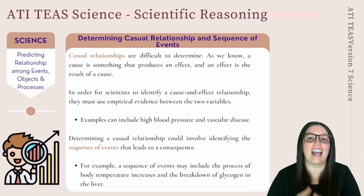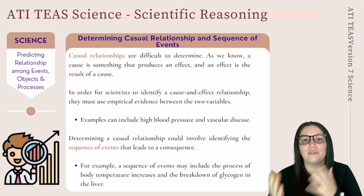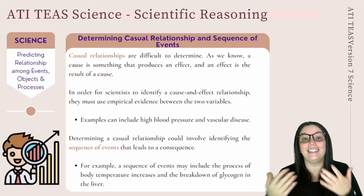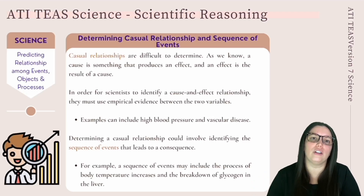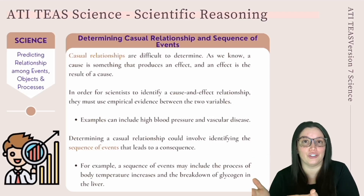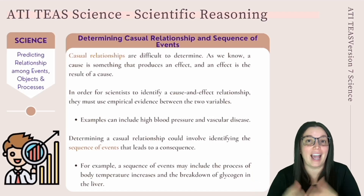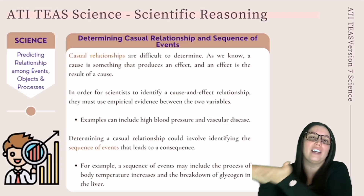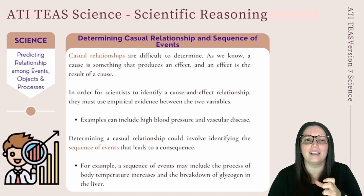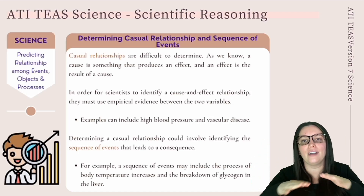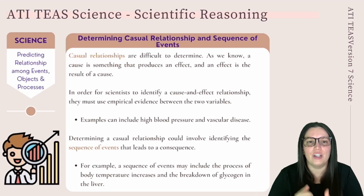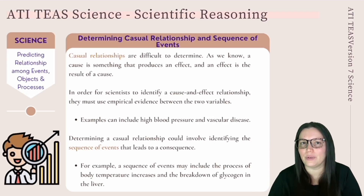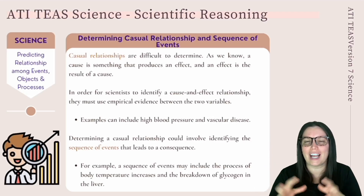Causal relationships are difficult to determine. Scientists must use empirical evidence between two variables to identify cause and effect — for example, high blood pressure and vascular disease: we know they affect each other, but how? Determining a causal relationship can involve identifying a sequence of events leading to a consequence. For example, when body temperature rises, the brain alerts the sweat glands to begin sweating — that is a sequence of events.